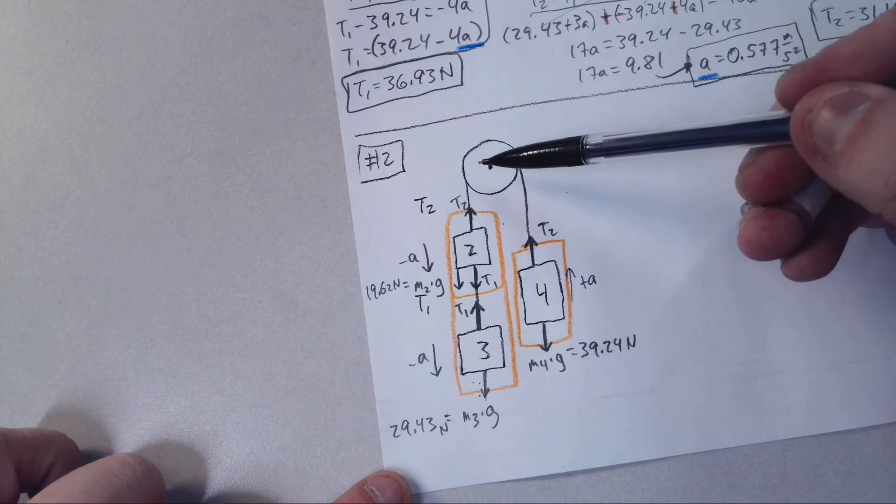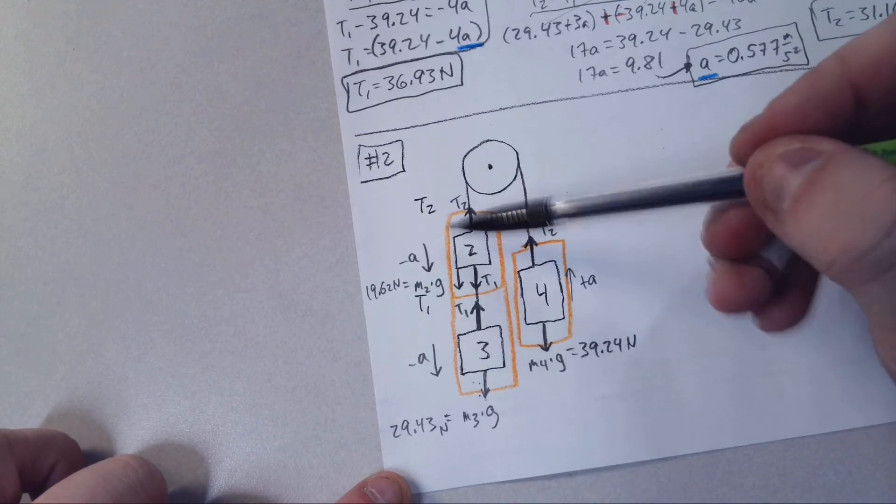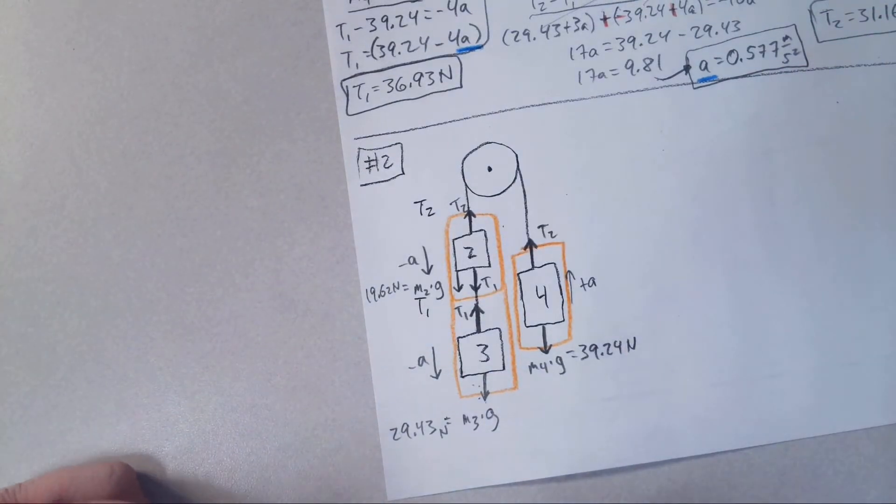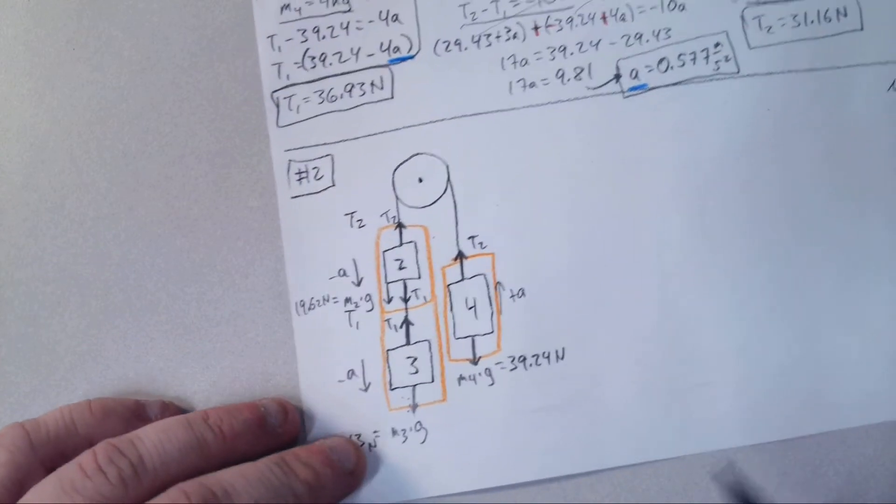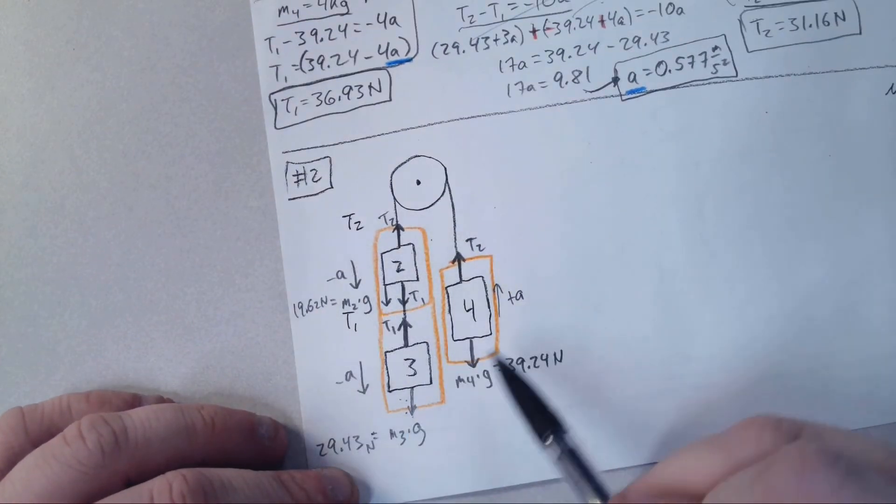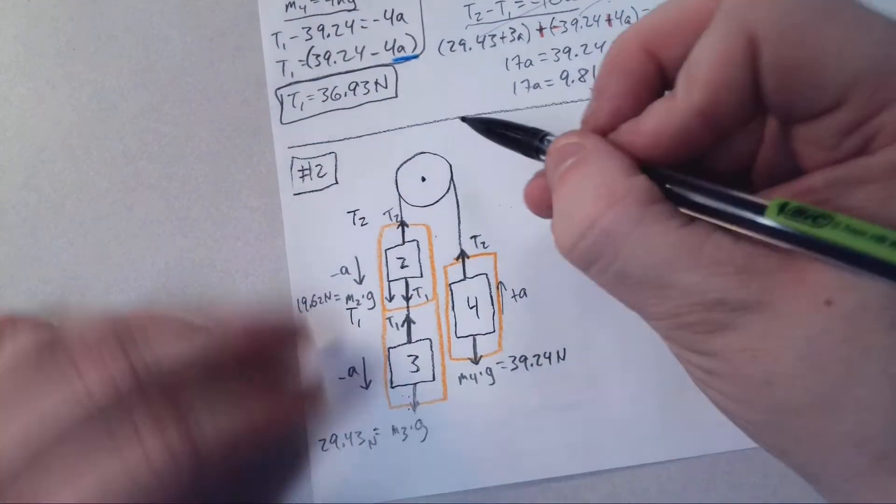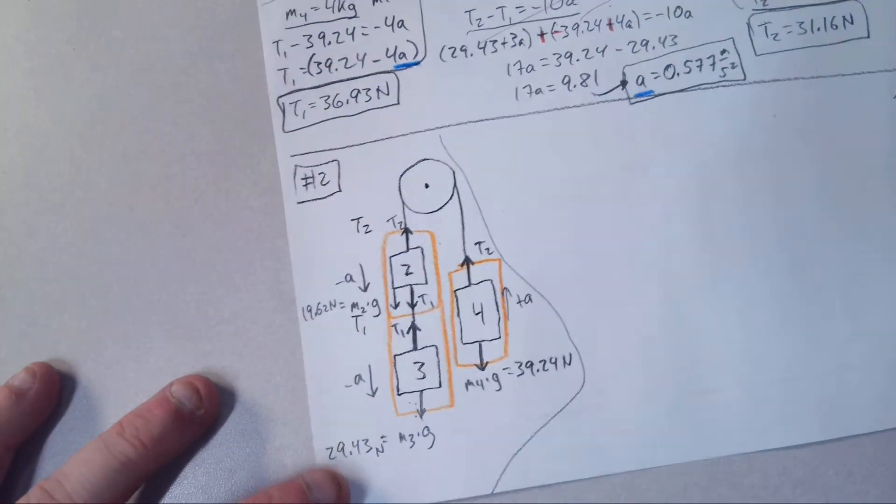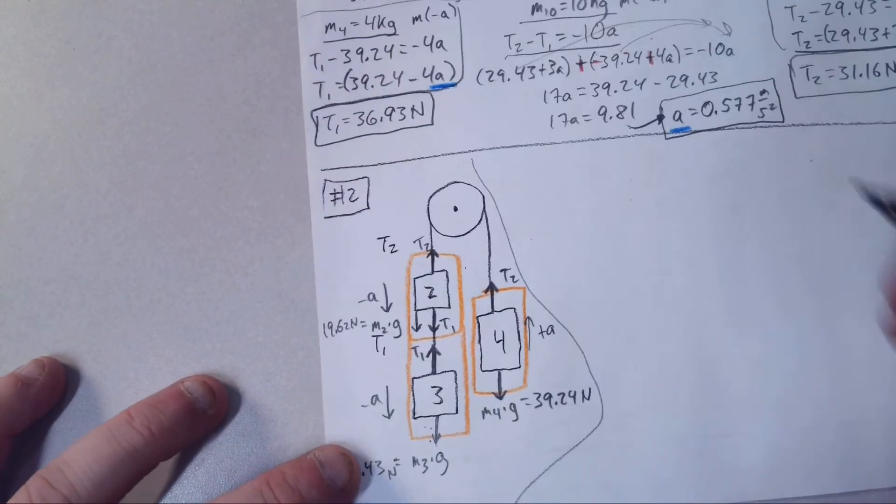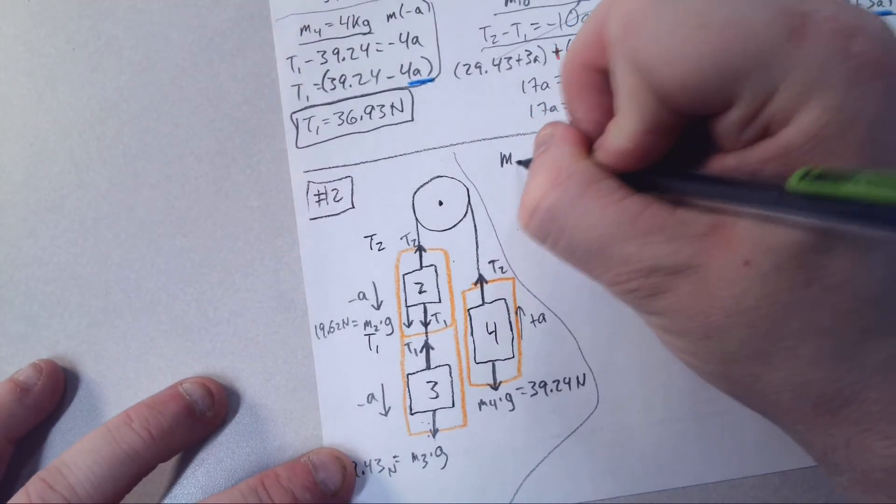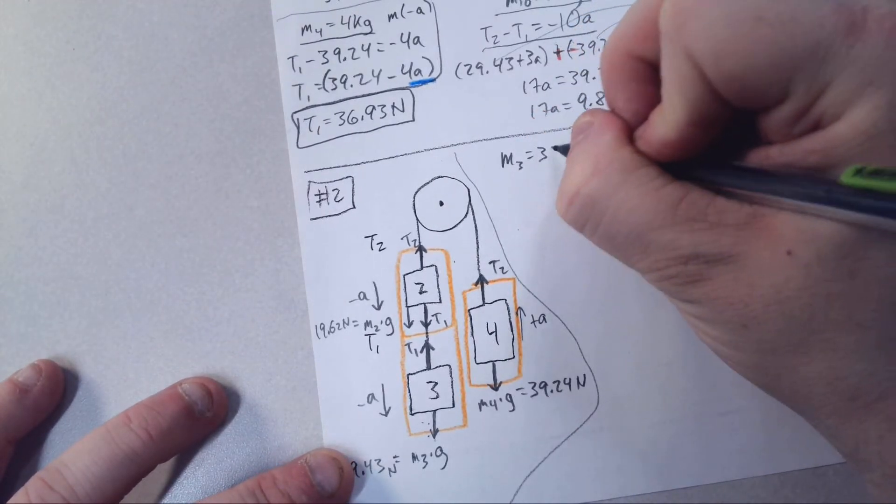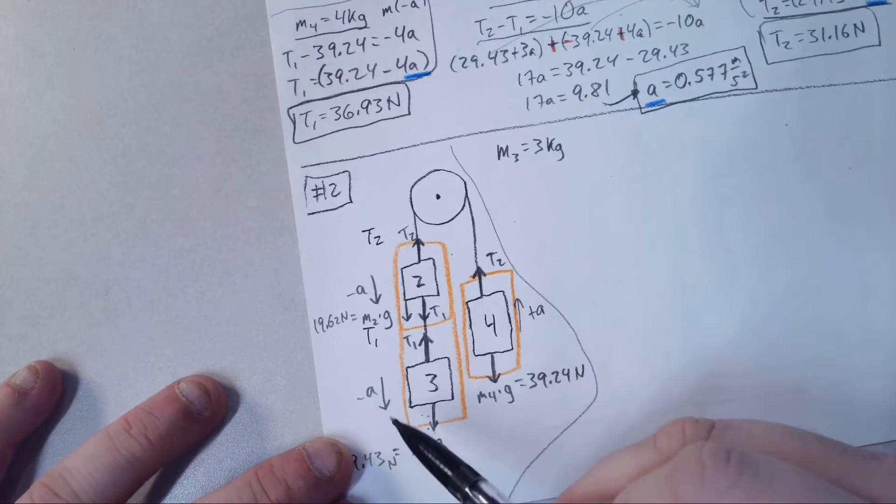So we have T2 up, minus T1, minus 19.62. That's really the only difference. Making sure we realize which way these are going. I'll drill this out to save some space. We'll go ahead and start with the 3 kilogram first.